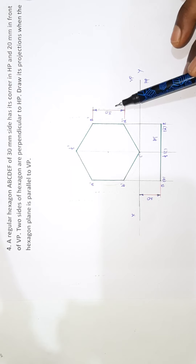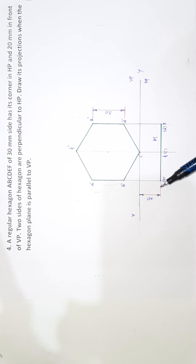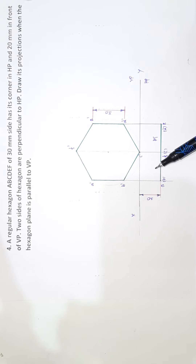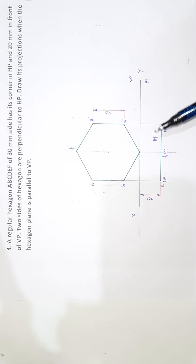This point is 30mm and this point is 20mm. So, right in front of VP is 20mm. Now the conditions are dropped.